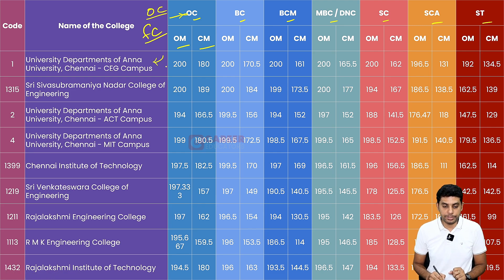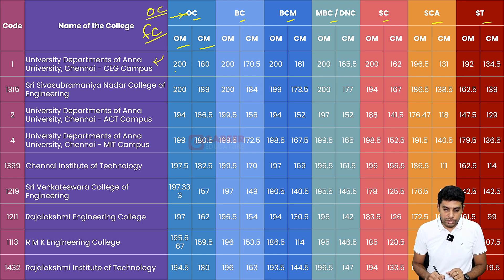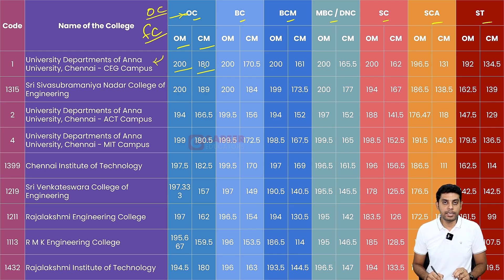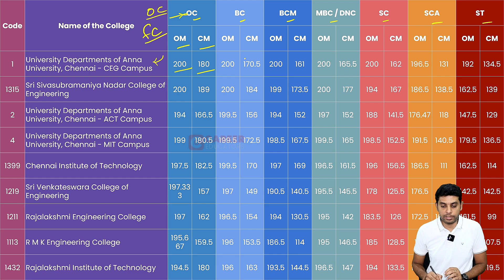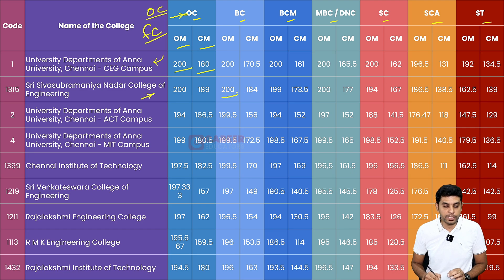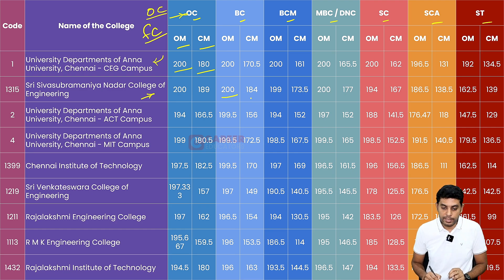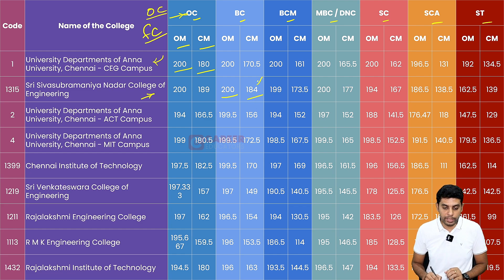For example, at Anna University CEG Campus, the first student admitted scored 200 marks and the last student scored 150 marks. This means they have a community-based allocation. If you have SSN as an example — for a BC candidate, the first BC community student in SSN scored 200 marks, and the last BC community student scored 184 marks.